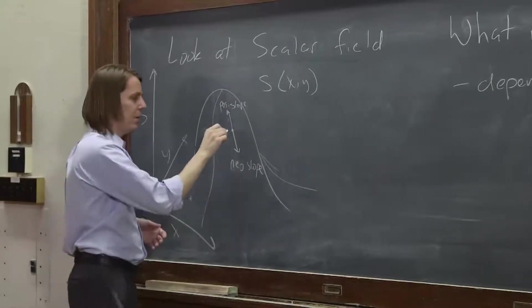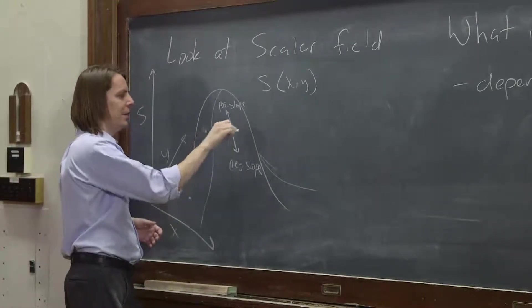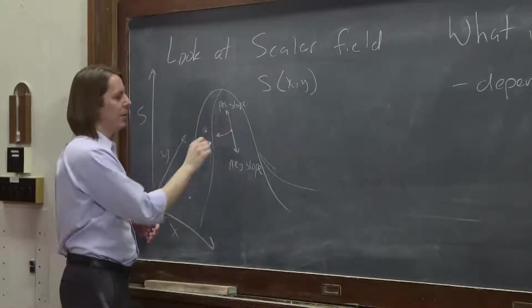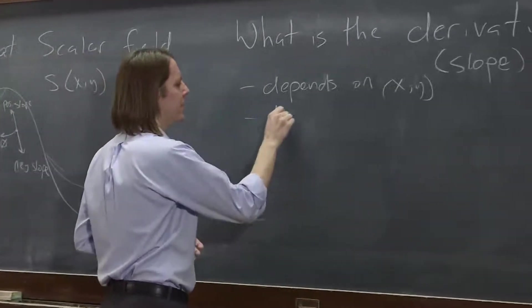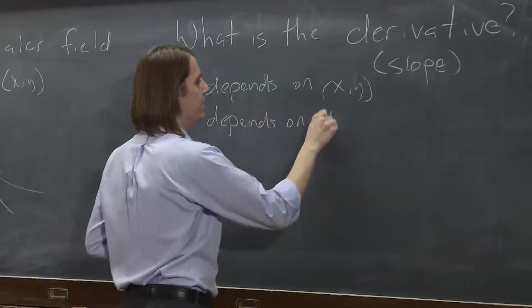What if I go around the hill? What if I go around like that, around this hump? Then it's zero. So not only does it depend on position, it depends on direction.